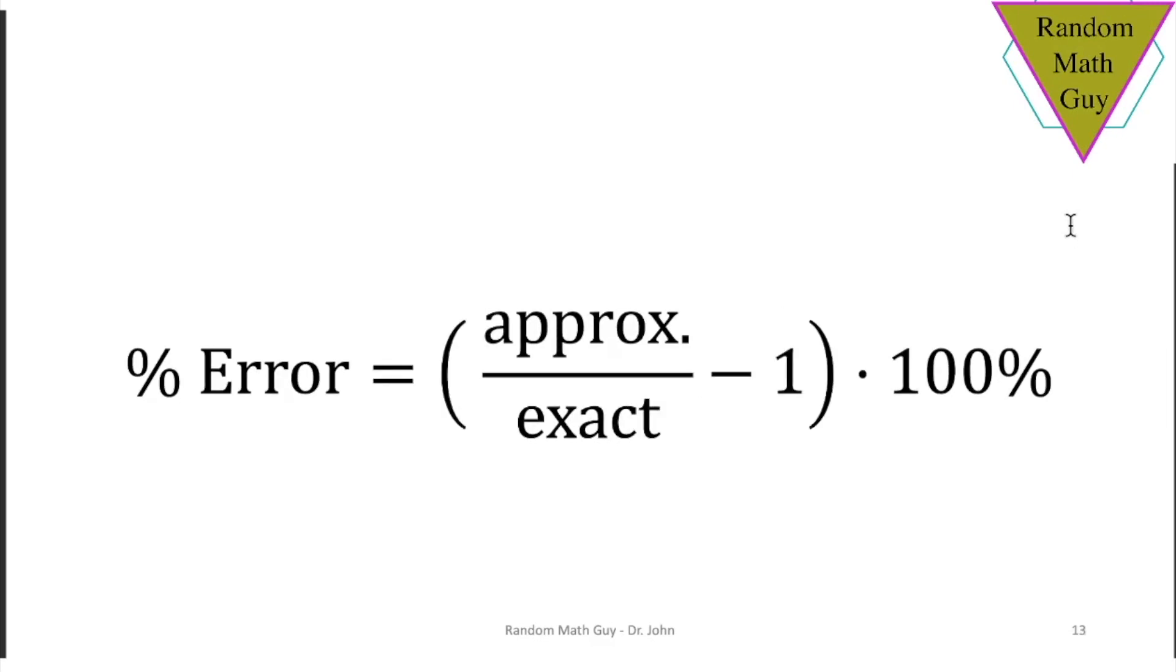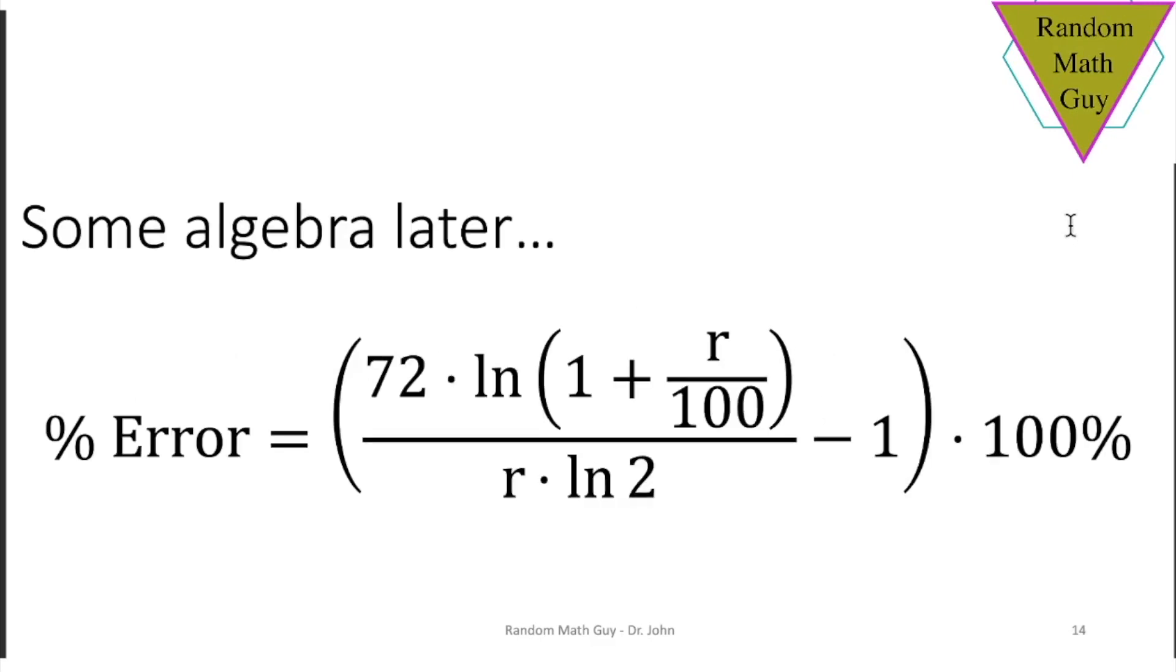We can rewrite this formula as such and substitute the approximate and the exact time required based on the estimate of the rule of 72. There it is. So the numerator is the rule of 72, the amount of time, and the denominator is the amount of time exactly. But now we've actually simplified it to get to the following equation.